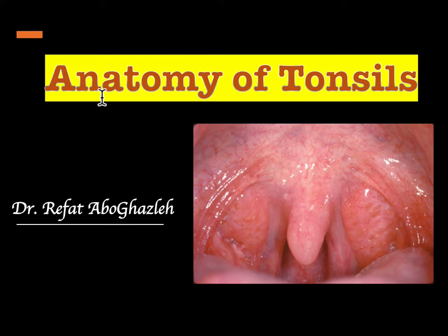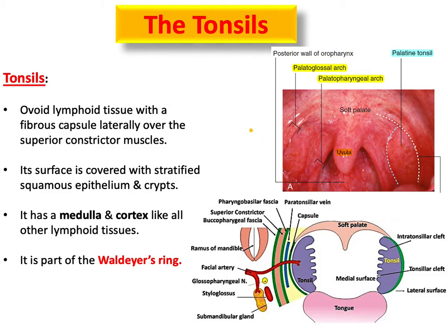Welcome to this short lecture on the anatomy of the palatine tonsil. As shown in the figure, the palatine tonsils are guarded by two arches, one anterior and one posterior. The palatine tonsils are ovoid lymphoid tissue with a fibrous capsule, located laterally in the oropharynx. In the figure you can see the palatine tonsils covered by a capsule shown in green.